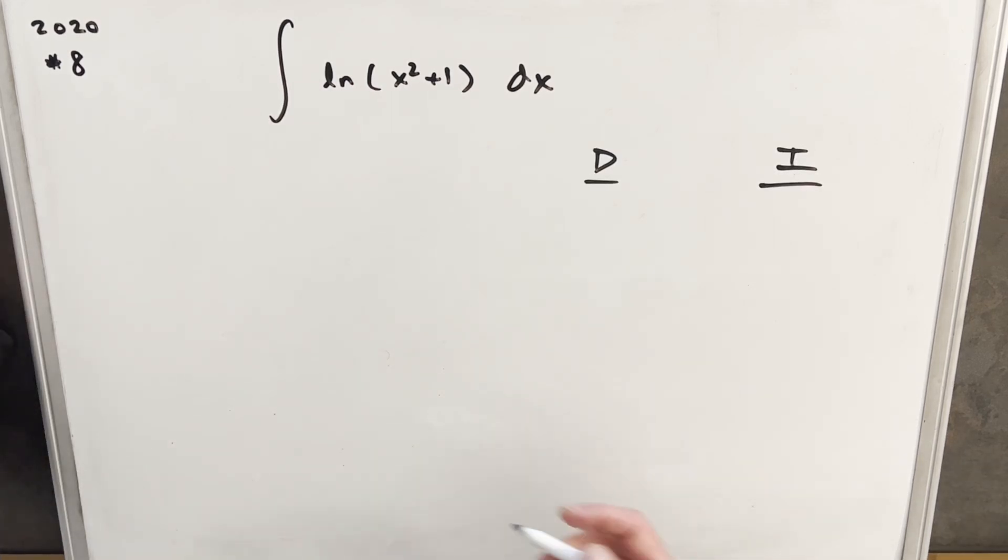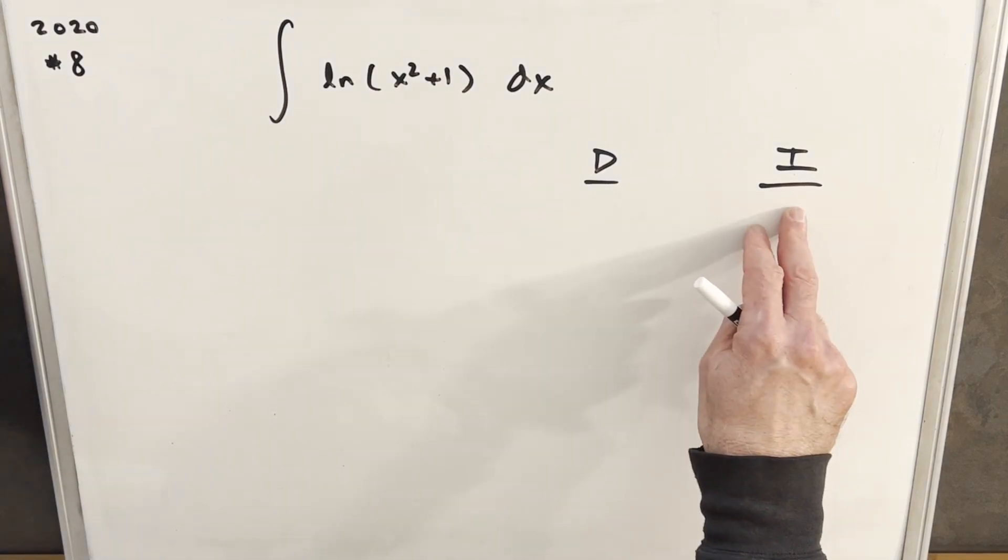Okay, for integration by parts, what I like to do is set up the DI method or tabular integration. We're just going to have a column to differentiate and a column to integrate.